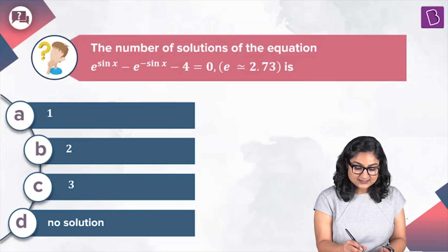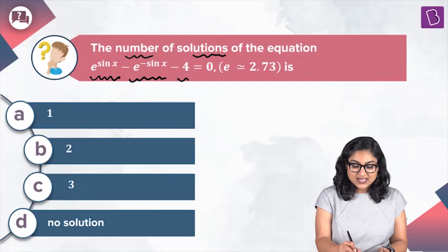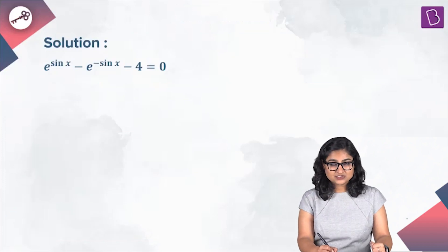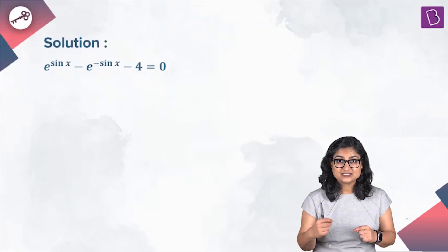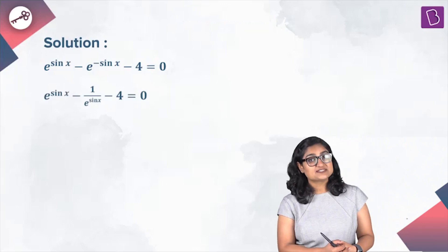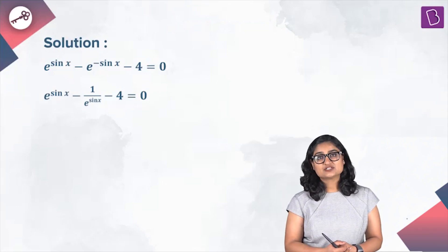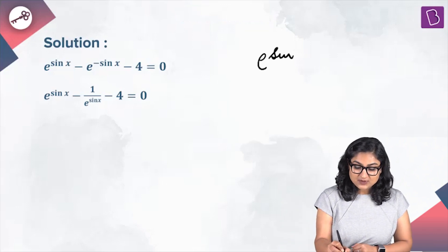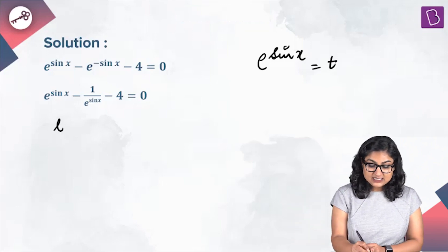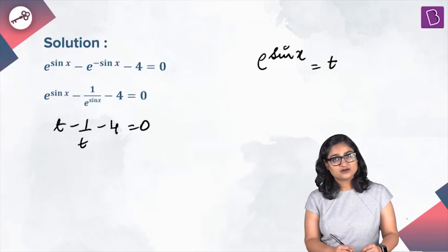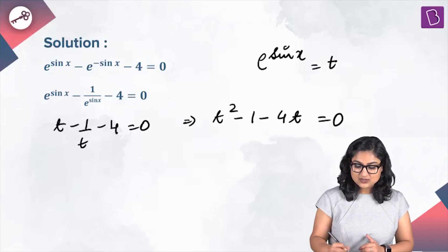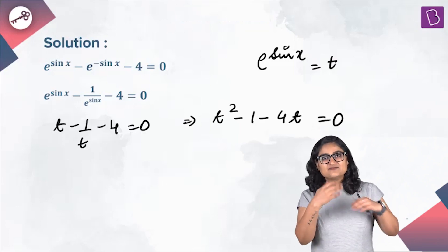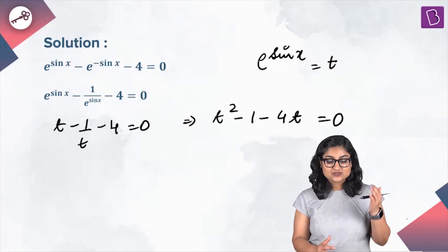In this question, we find the number of solutions of e^(sin x) − e^(−sin x) − 4 = 0. Rewriting e^(−sin x) as 1/e^(sin x) and substituting t = e^(sin x), we get t − 1/t − 4 = 0. Multiplying through by t gives the quadratic t² − 4t − 1 = 0.